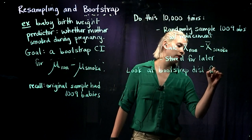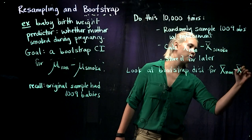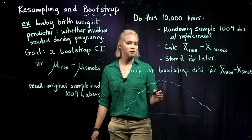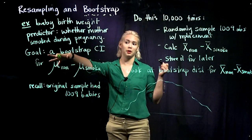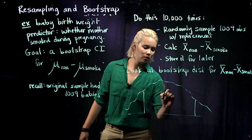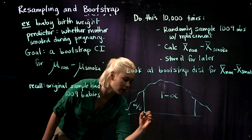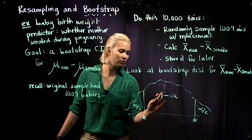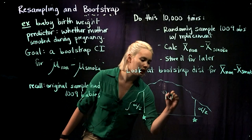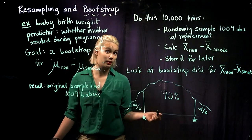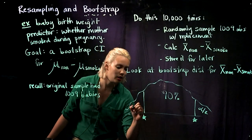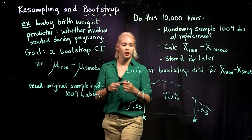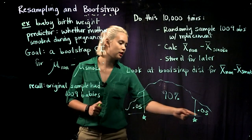We're looking at our bootstrap distribution for x̄_non minus x̄_smoke. If we wanted a 1 minus alpha confidence interval, we would look for the cutoff so that we have alpha over 2 in the left tail and alpha over 2 in the upper tail. More concretely, for a 90% confidence interval, that leaves 10% for the two tails, so 5% in each tail. We can use the quantile function in R to find the points that cut off 0.05 in each tail.